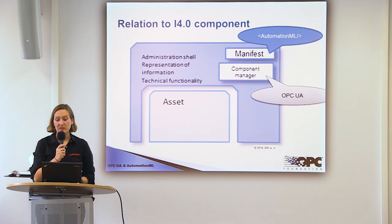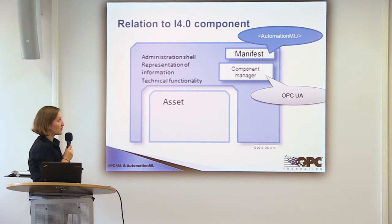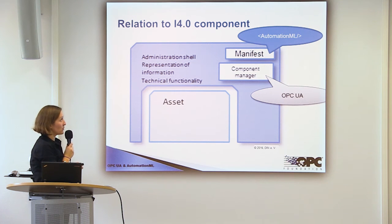Last but not least, AutomationML and OPC UA are discussed in the context of Industry 4.0. Some concepts already defined include the Industry 4.0 component, which includes the manifest describing the possible functionality of the component and the component manager which gives access to the component. OPC UA can be used to realize a component manager, and AutomationML can be used to describe the manifest of the Industry 4.0 component. By combining both, you can access the Industry 4.0 component and use the full information about it — its description, functionality, and properties.